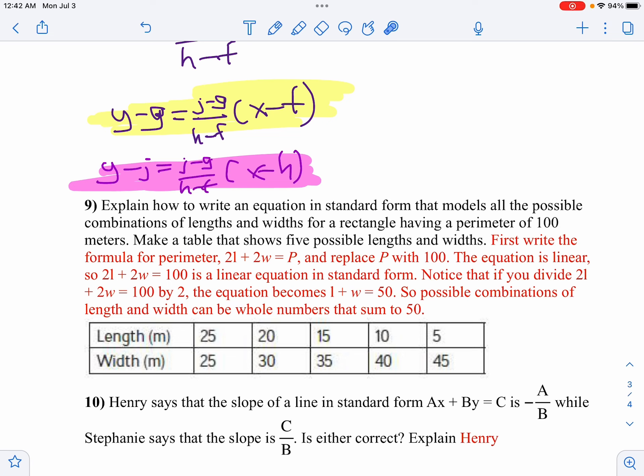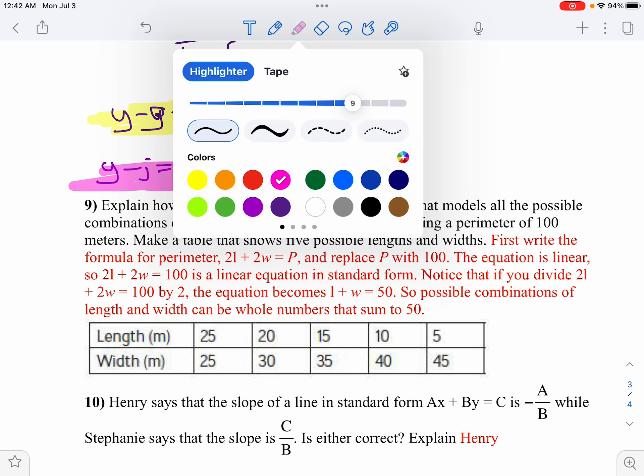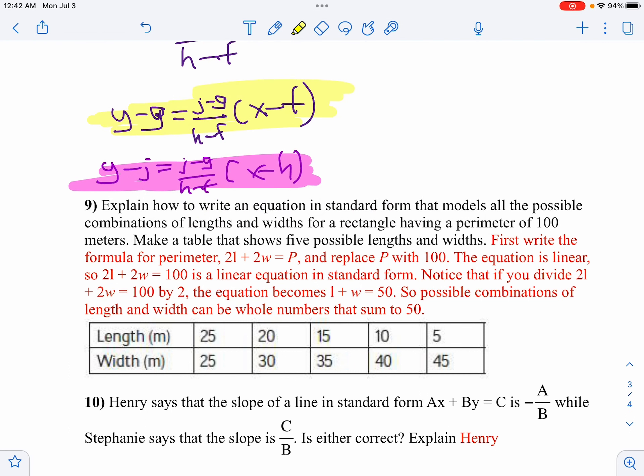That might make it easier to do, so we just simplify that. So I just want a combination of two numbers that add to 50. I listed some of them here, but these aren't the only ones. And make sure when you do it, you list five different solutions on that one.